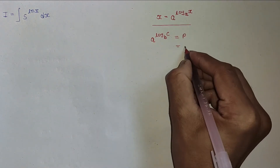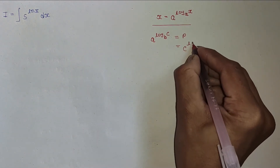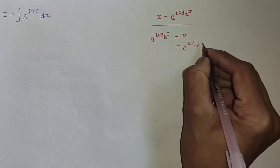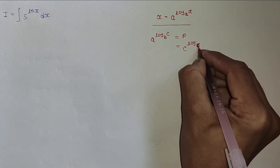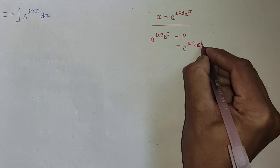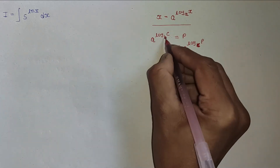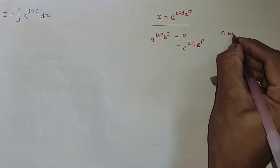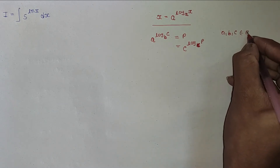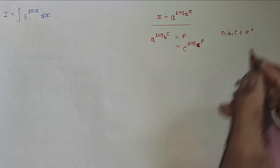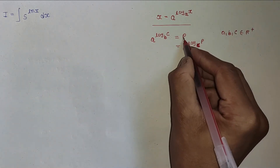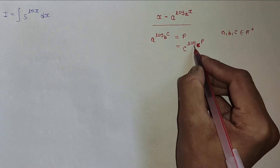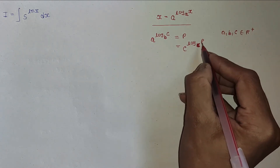Here a, b, and c belong to ℝ⁺. So p can be written as c^(log_c p). Now substituting p = a^(log_b c) into c^(log_c p).